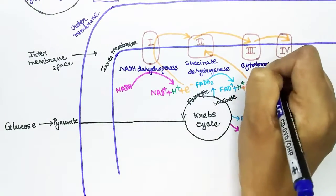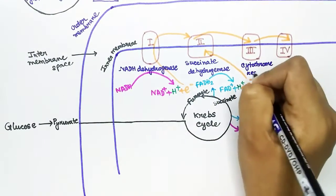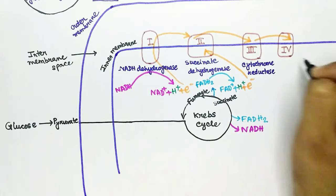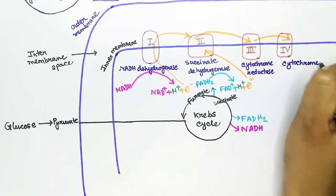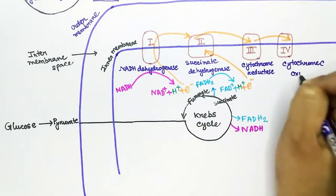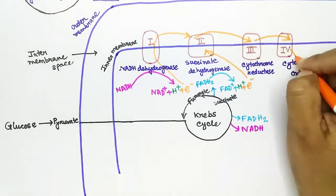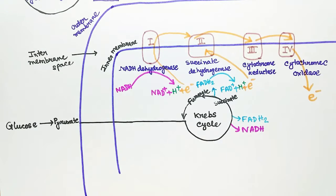Complex 3 is called cytochrome reductase, and this complex will also pass the electrons to the next complex. Complex 4 is the next in the chain, and the name of Complex 4 is cytochrome c oxidase.